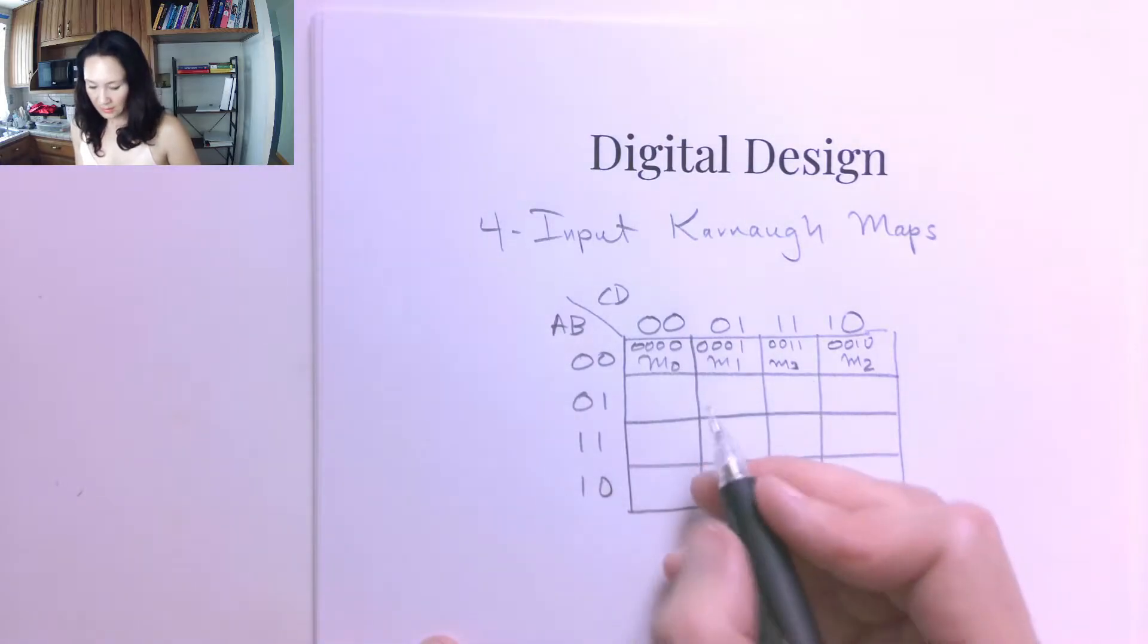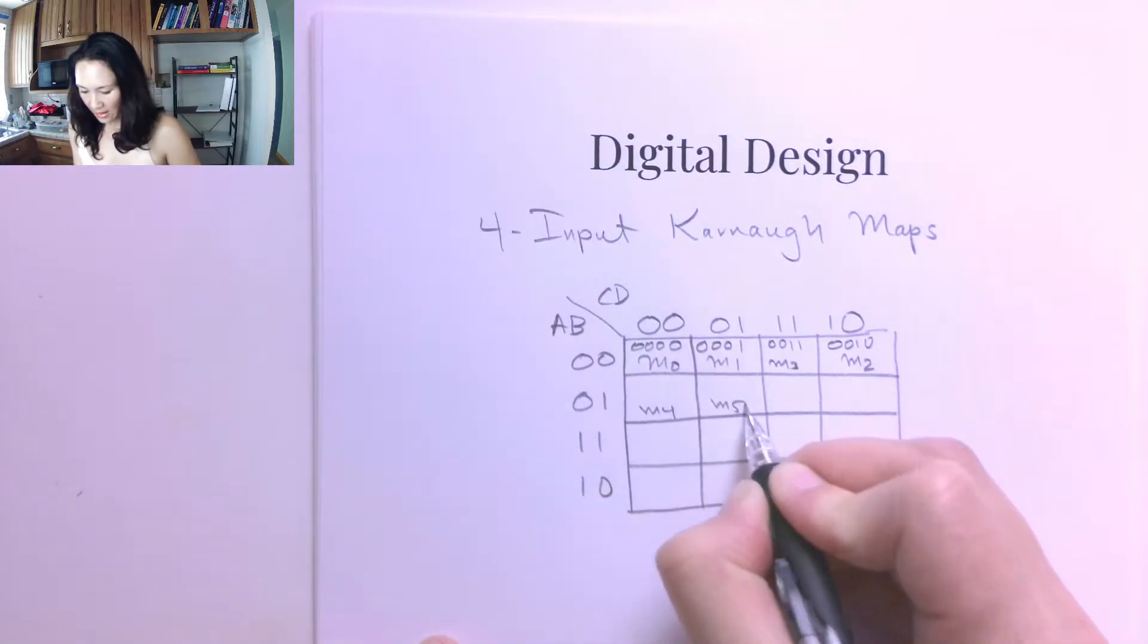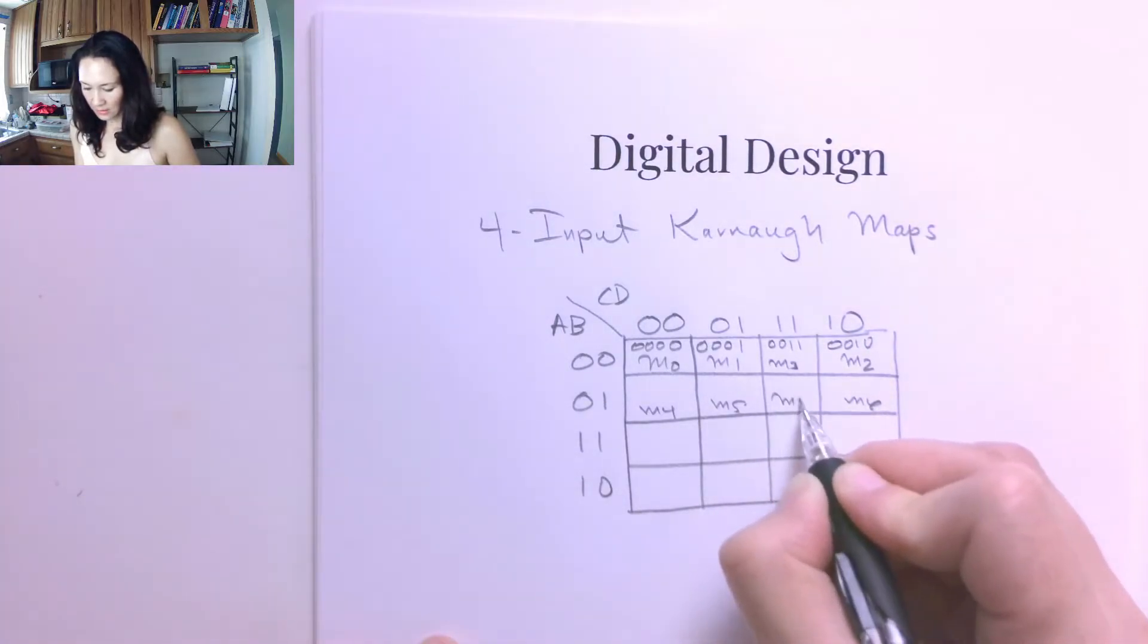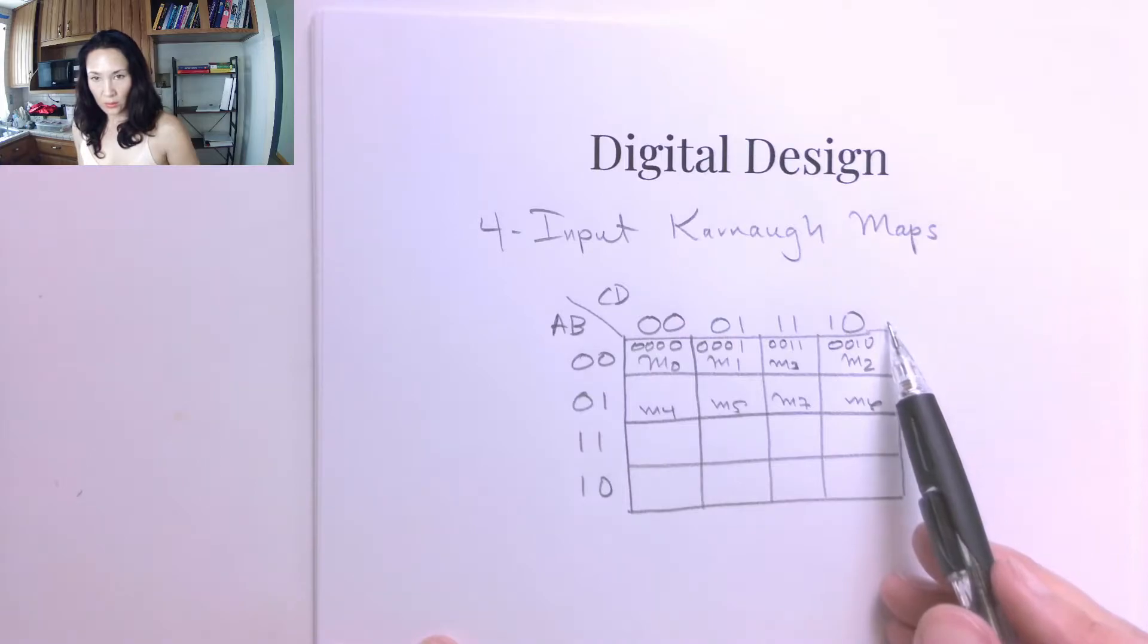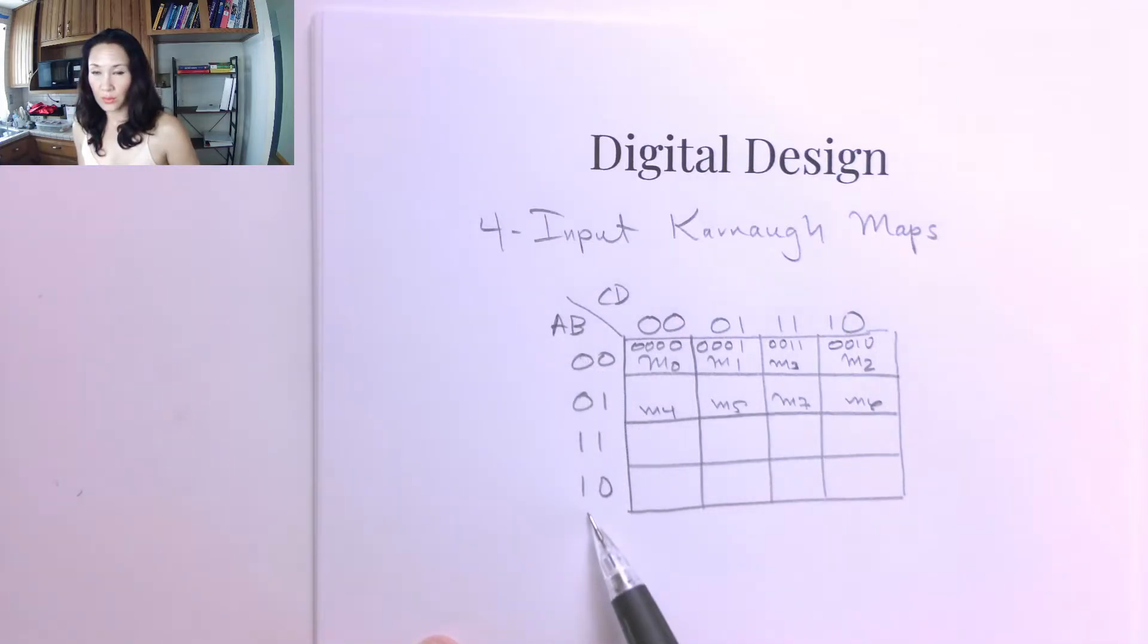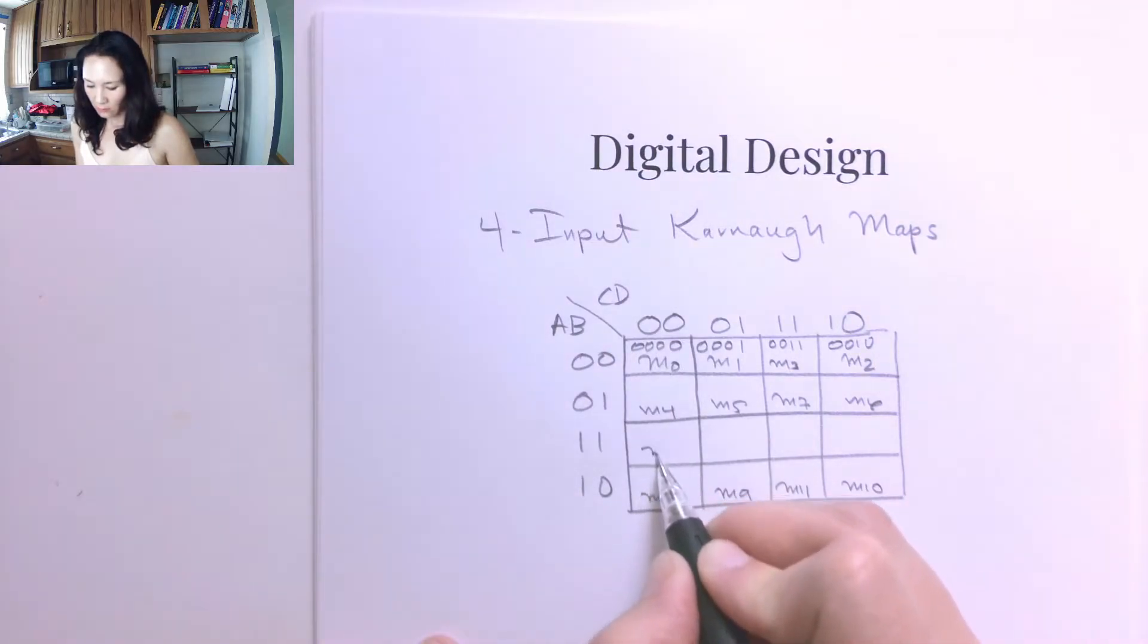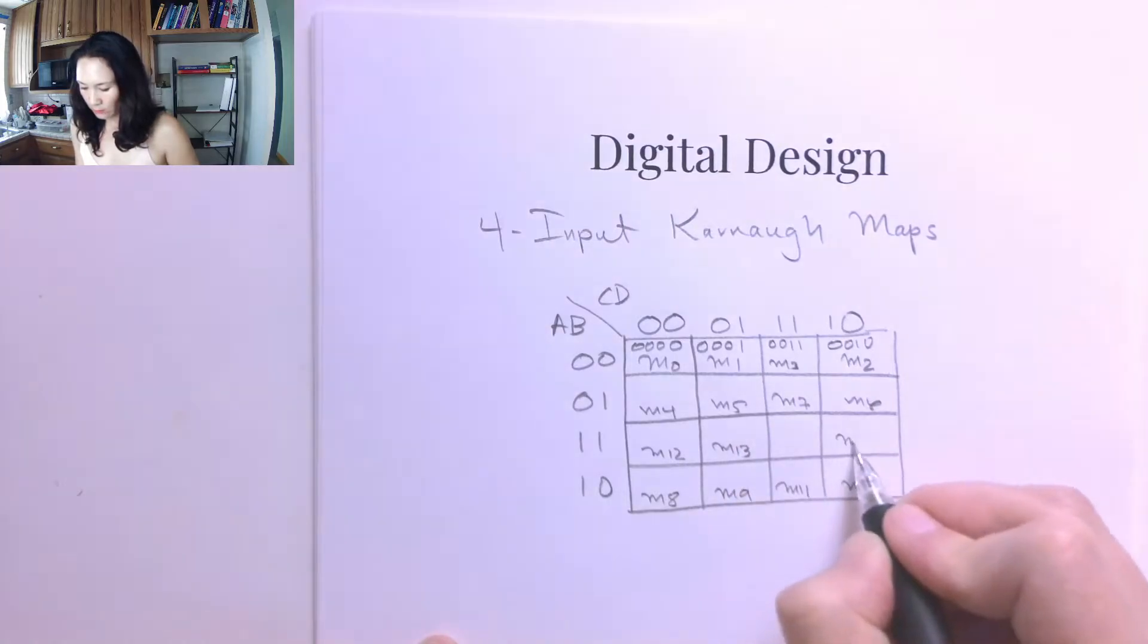So this is min term 3. That makes this min term 4, min term 5, skip 1 for min term 6, and back for min term 7. Now we constructed the columns in gray code order, but we also constructed the rows in gray code order. So that means if this is our first row of min terms and this is our second, we need to skip a row for our third and come back for our fourth.